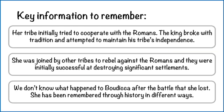What's our key information to remember? Number one, her tribe initially tried to cooperate with the Romans, just as Cartimandua had. The king of the tribe, Prasutagus, broke with tradition and attempted to maintain his tribe's independence — it didn't work. She was joined by other tribes to rebel against the Romans, and they were initially successful at destroying significant settlements — that's Colchester and London. We don't know what happened to Boudicca after the battle that she lost. She has been remembered through history in different ways.